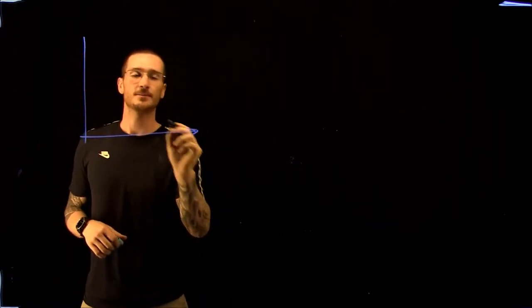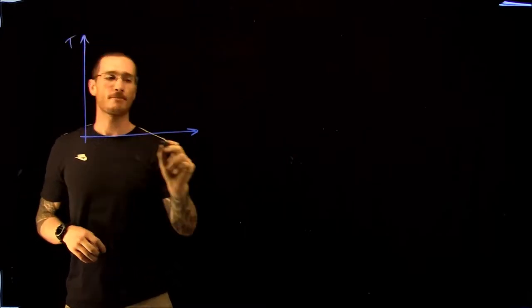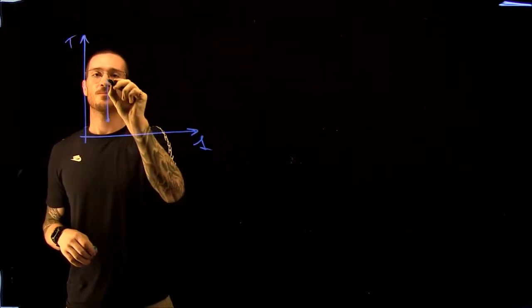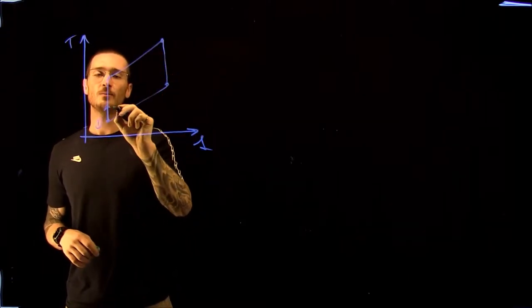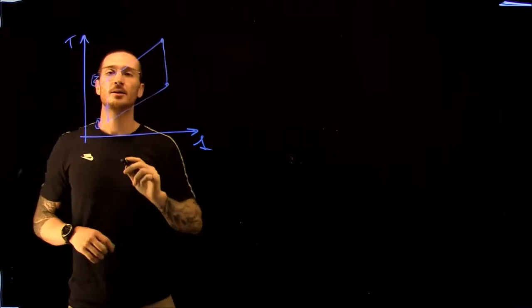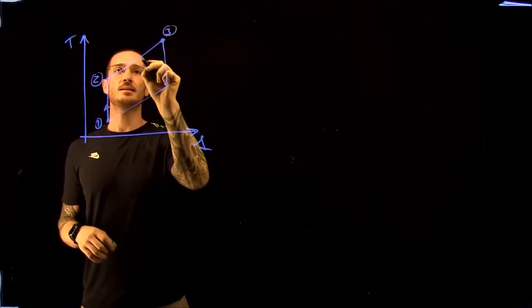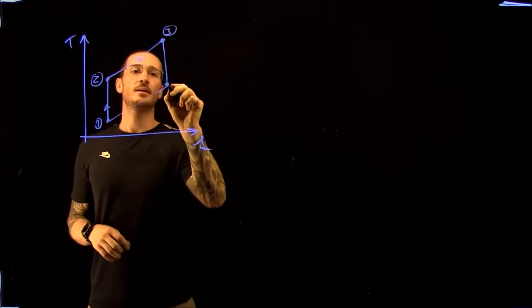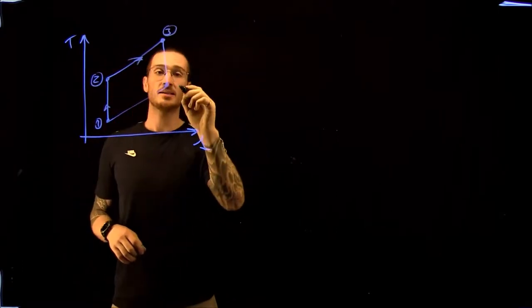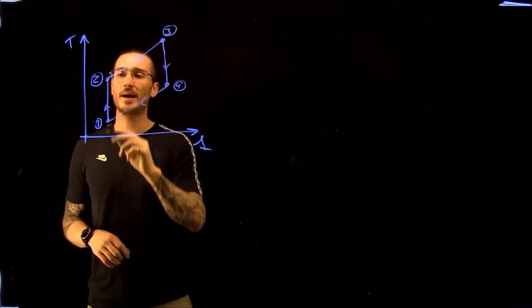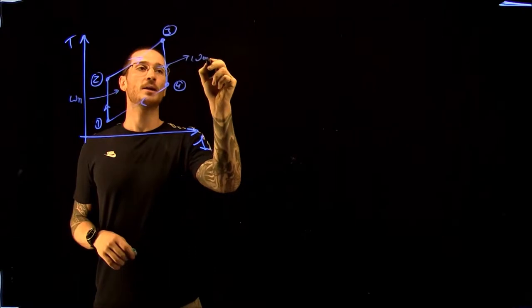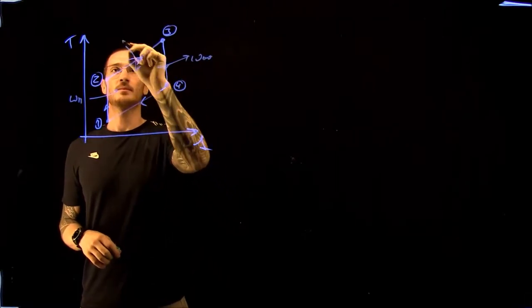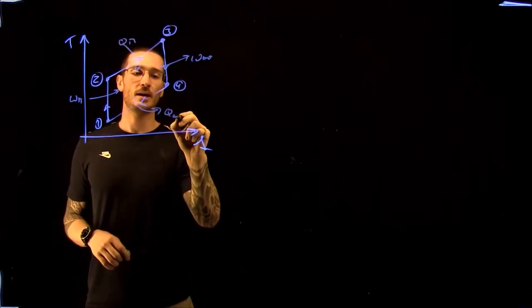First, we draw our TS diagram for an Otto cycle. We isentropically compress from state 1 to state 2, then add heat from state 2 to state 3, isentropically expand from state 3 to state 4, and return to state 1. On the TS diagram we have work in, work out, Q in, and Q out.